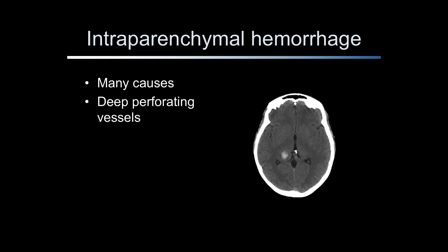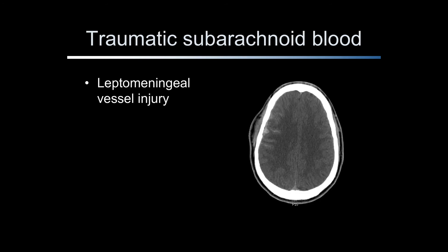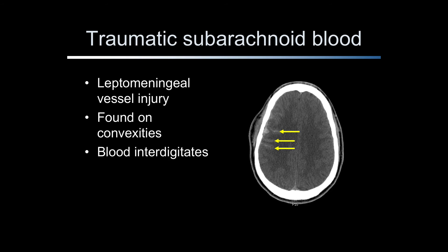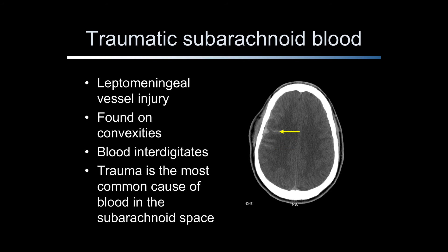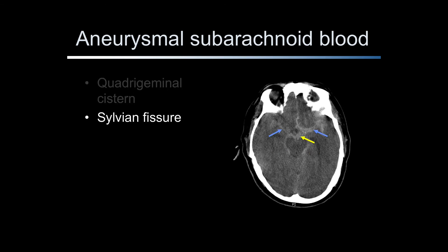Hypertensive hemorrhages are due to rupture of deep perforating vessels and will manifest as bleeding in the area of the basal ganglia, as pointed out by the arrow. Traumatic subarachnoid blood results from injury to the leptomeningeal vessels and bleeding into the space beneath the subarachnoid membrane. It is typically found on the convexities next to the skull, and blood interdigitates into the cortical sulci conforming to the subarachnoid space. Traumatic subarachnoid bleeding is frequently seen with epidural and subdural hematomas. Trauma is the most common cause. In contrast, aneurysmal subarachnoid blood is typically found in the quadrigeminal cistern, the basilar cisterns, and the sylvian fissures, and is most commonly due to rupture of a saccular aneurysm of the circle of Willis.